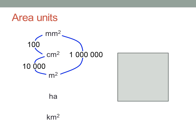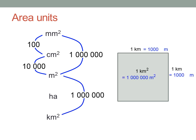So now you can work out square kilometres. There's a thousand metres in a kilometre, so that's a thousand times a thousand, which is one million square metres in a square kilometre. That's a very big area.